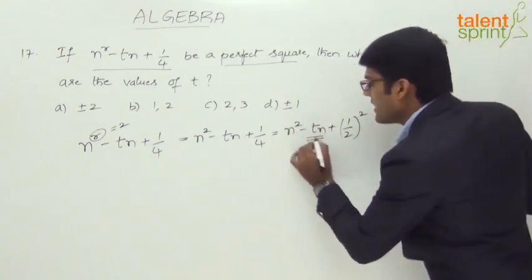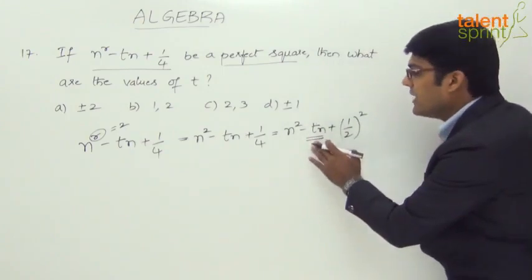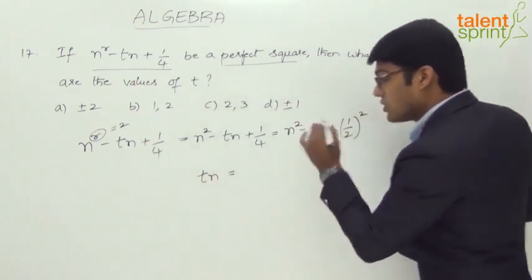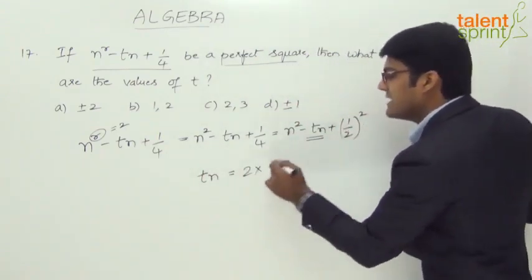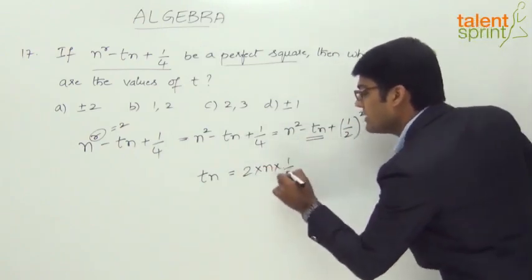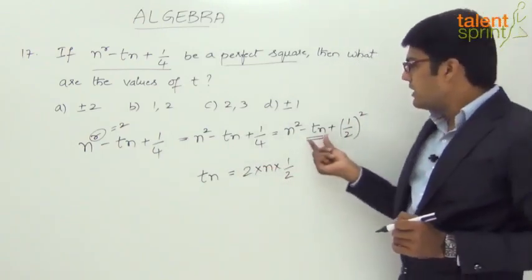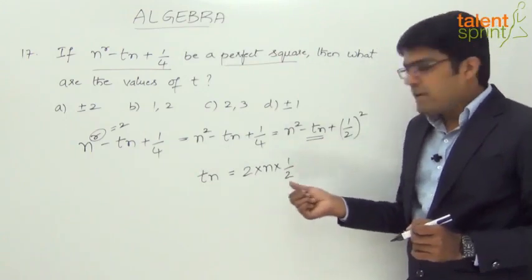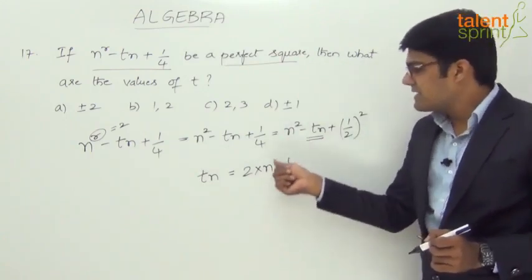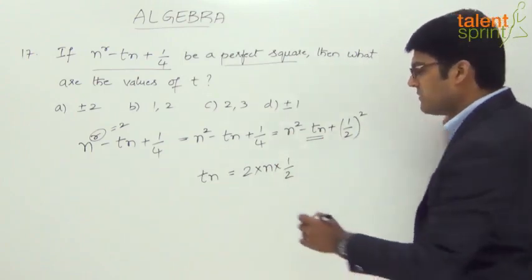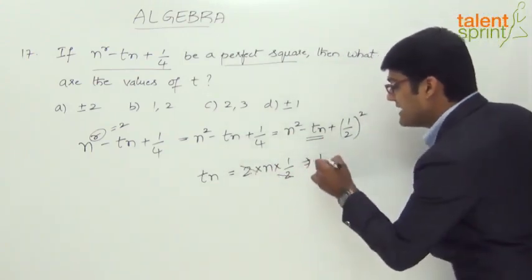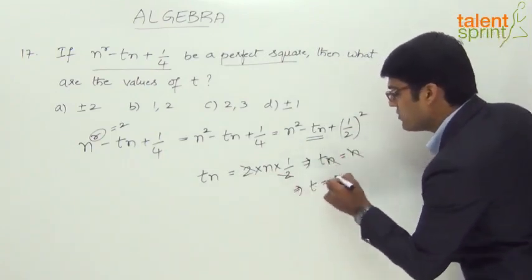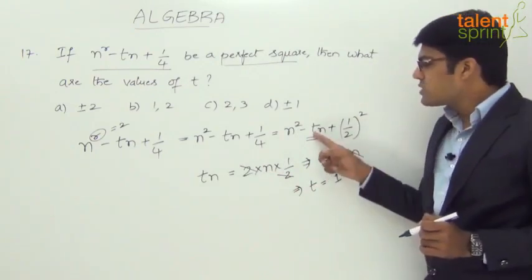Now focus on the 2ab part. What is 2ab? tn, right? 2ab is equal to tn. But what should actually be 2ab? It should be 2 times a, which is n, times b. What is b? 1/2. Are you following? The 2ab term in the given expression is tn, and by taking actually 2 times a times b, what do we get? 2 times n times 1/2. Now simplify this: 2 and 2 gets cancelled, so tn equals n. n anyway gets cancelled, so t equals 1.